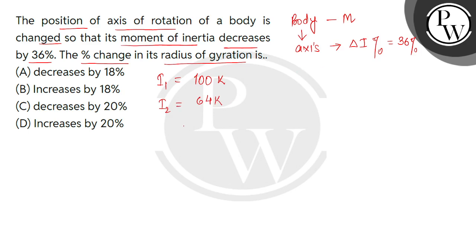Now we have to find the percentage change in radius of gyration. This means we have to find delta k divided by k in percentage. The relation is I equals mk squared, where k is the radius of gyration.